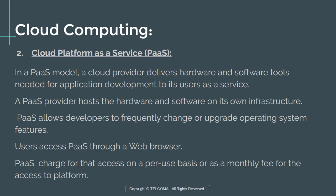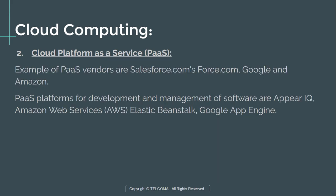PaaS allows developers to frequently change or upgrade operating system features. Users access PaaS through a web browser and are charged on a per-use basis or as a monthly fee. Examples of PaaS vendors include Salesforce.com's Force.com, Google, and Amazon. Specific PaaS platforms include Apprenda, Amazon Web Services Elastic Beanstalk, and Google App Engine.